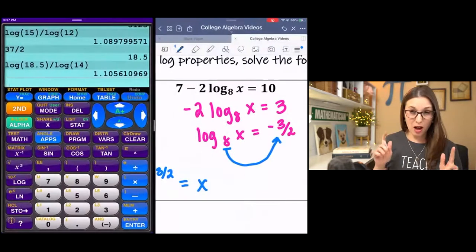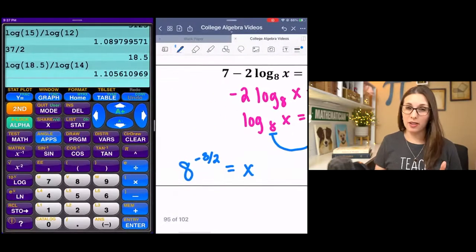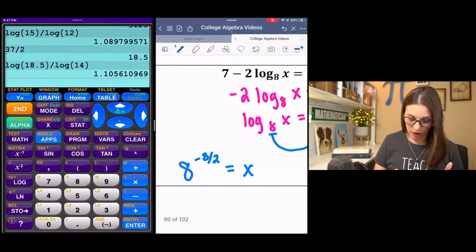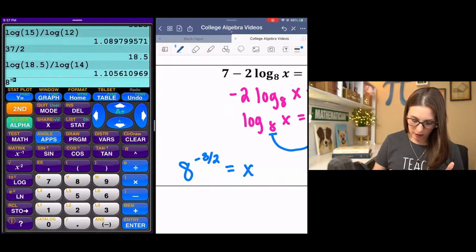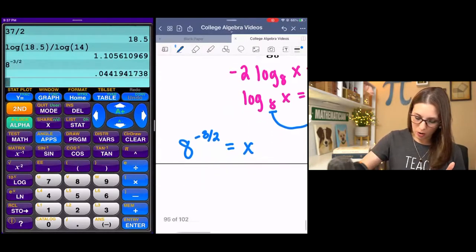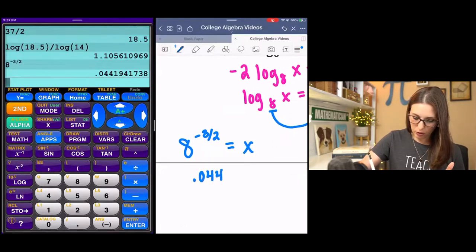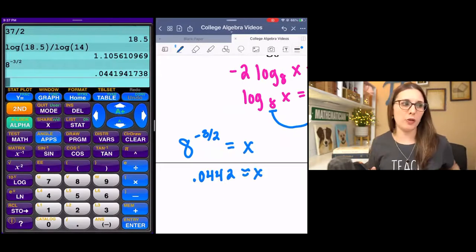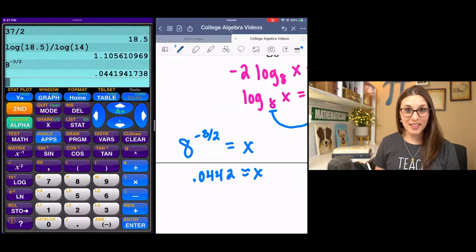Oh, I love logs. I thought quadratics were my favorite, but I think logs are my favorite. I'm pretty sure they are. 8 raised to the negative 3 halves is about 0.0442. I'm going to do approximately because I've rounded. That's it.